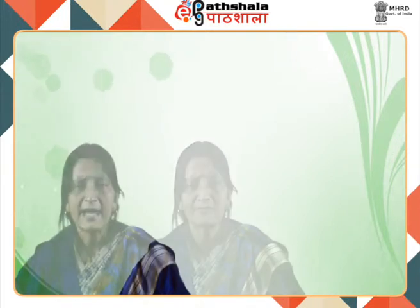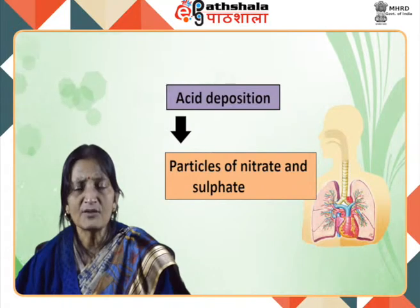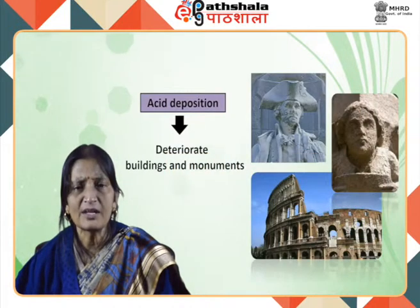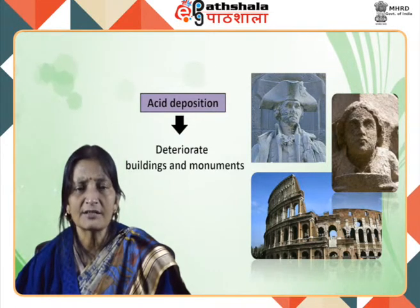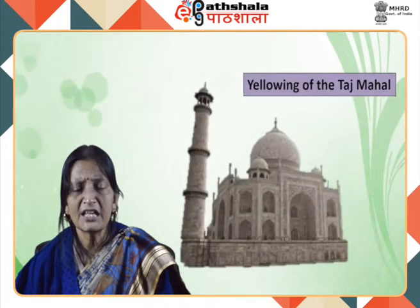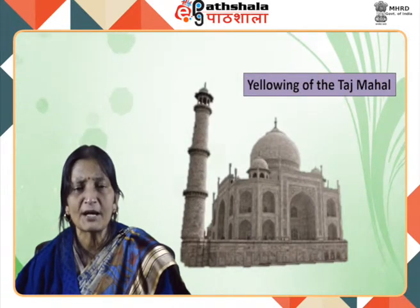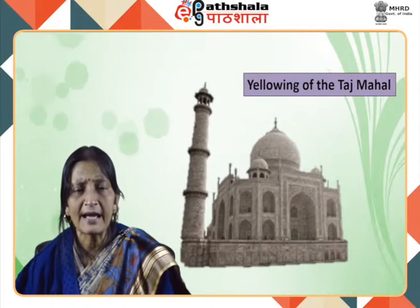Such water becomes unfit for irrigation and consumption by humans, domestic animals and wildlife. Acid deposition as particles of nitrate and sulphate can be carried deep into the lungs causing respiratory and cardiac illness and aggravating conditions such as asthma and bronchitis. Acid rain also causes buildings and monuments to deteriorate. Many historical buildings are built with marble containing calcium carbonate; sulfuric acid in acid rain converts calcium carbonate into calcium sulphate, causing discoloration and pitting of the stone. The yellowing of the Taj Mahal, earlier famous for its pure white marble structure, is an example. Corrosion of metal structures like bridges is also accelerated by high acidity of rain.